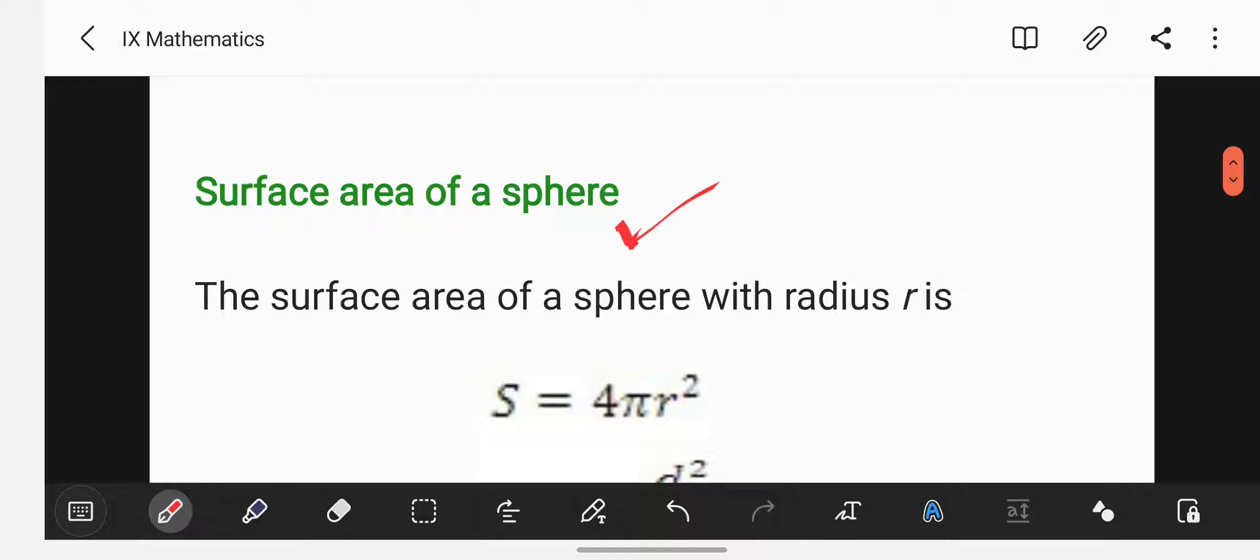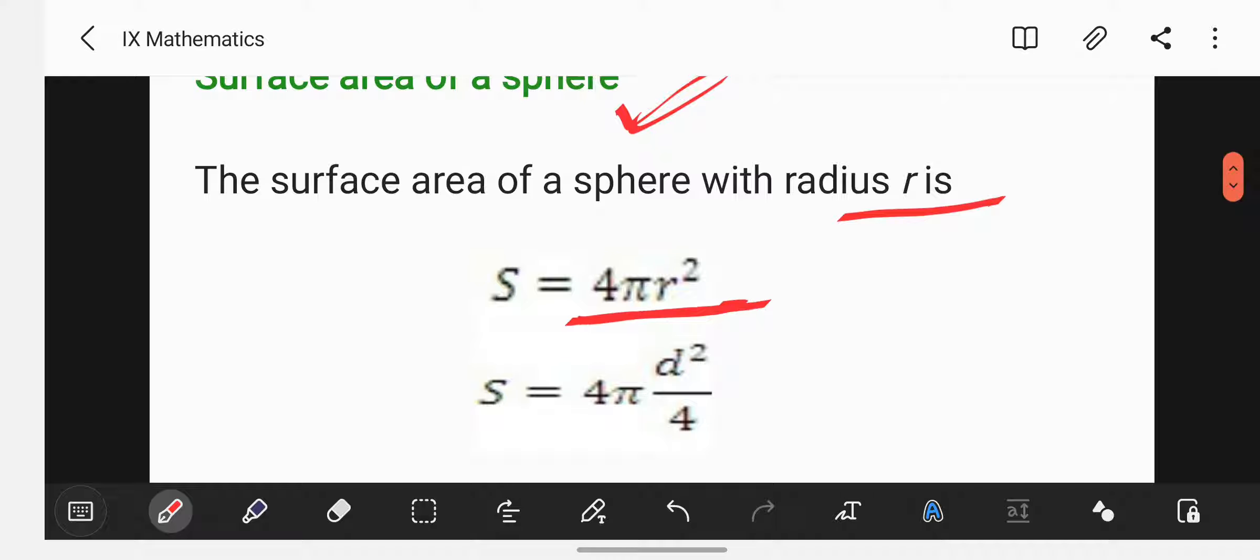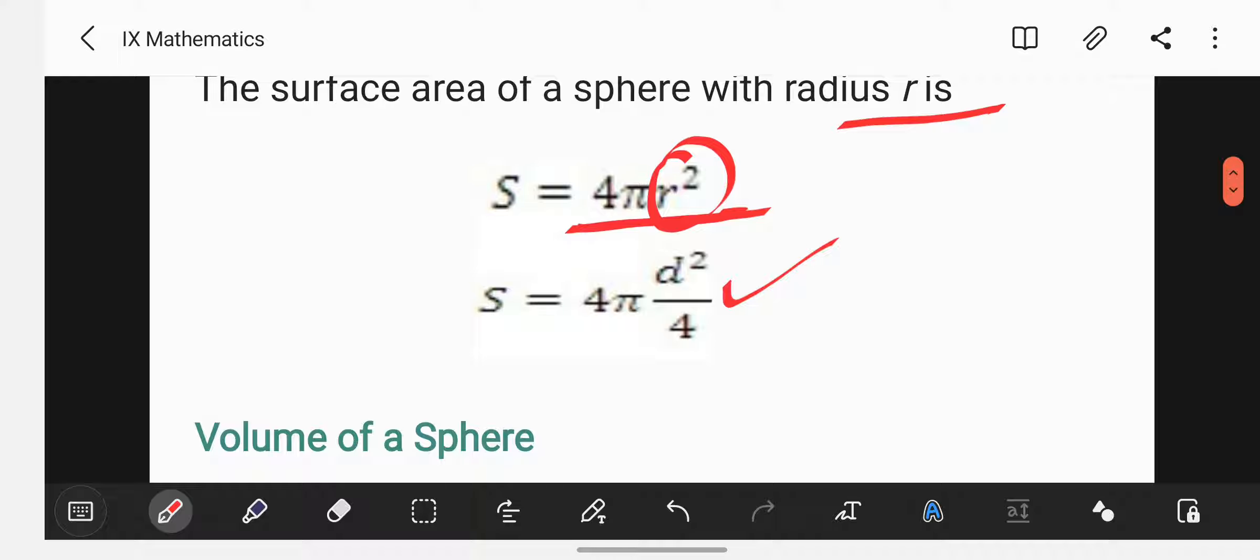So first of all in the category of class 9th, we'll talk about the surface area of a sphere as well as the volume of the sphere. The surface area of the sphere with radius r is given by s equals to 4πr². Also, if you want to change r in the forms of d, that becomes s equals to 4πd²/4. If diameter is given, you can apply this formula.